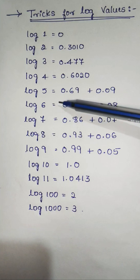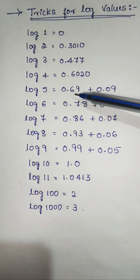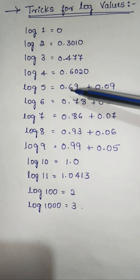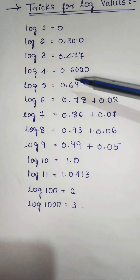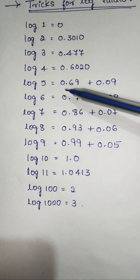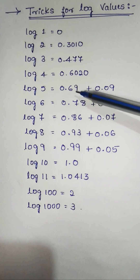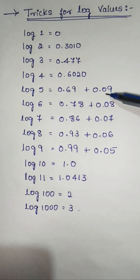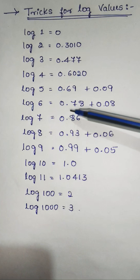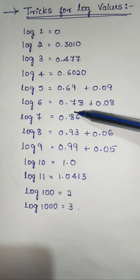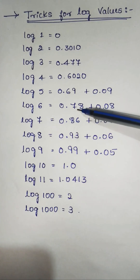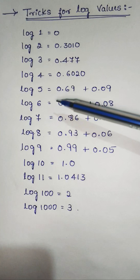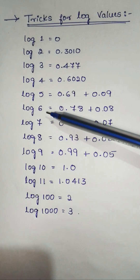Log 5 is equal to 0.69. You also remember this value, 0.69, for log 5. To this you have to add 0.09, then you will get the answer 0.78. This is the value of log 6.